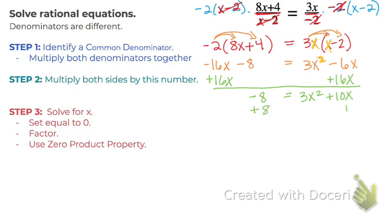And now I'm going to add 8 to both sides to move this minus 8. So I have 0 equals 3x squared plus 10x plus 8.